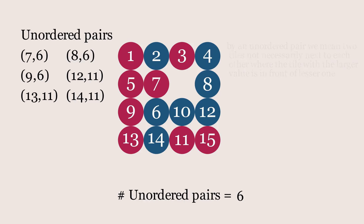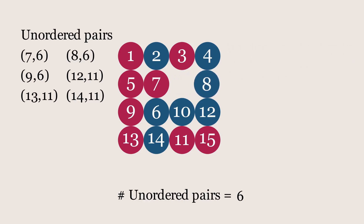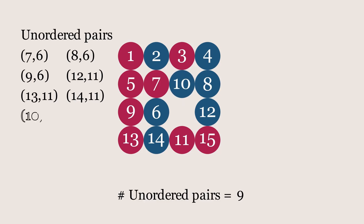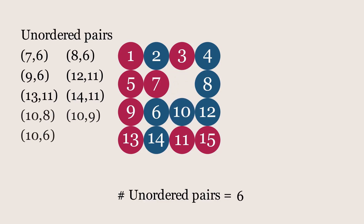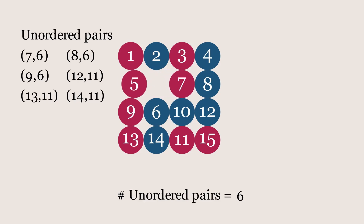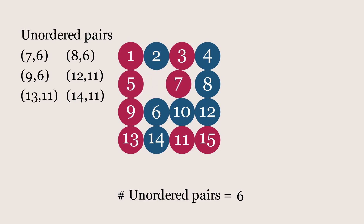The moves we can make are moving some tile to the left, right, up, or down. In the case where we make a horizontal move, the order of the numbering doesn't change. But when we make a vertical move, we do get some change in the ordering.